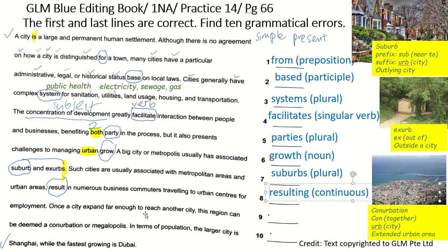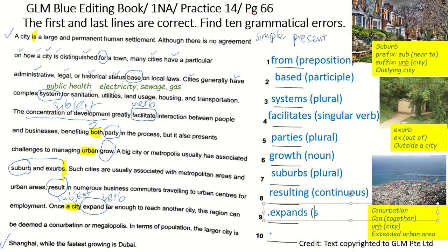Once a city expands far enough to reach another city, this region can be... Notice the subject here is 'a city' — one city, a singular subject. So we need a singular verb. The verb should be 'expands' — that is the singular form of 'expand'.